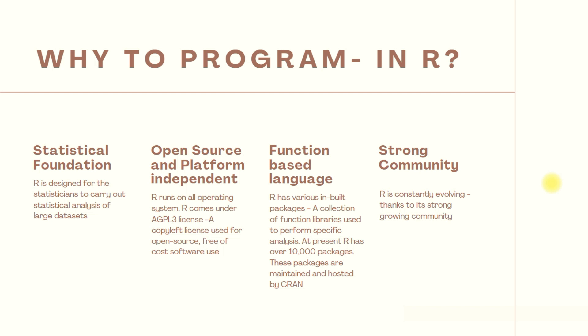Going ahead with the advantages of R, the second advantage is that it is open source and platform independent. Open source means you don't have to pay any money for licensing — there is no licensing fee involved. R is platform independent, meaning you can run R on Linux, Mac, or Windows. Effectively, you write only one code and that one code can run on all three platforms.